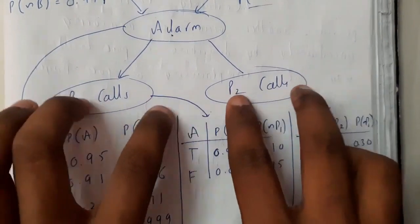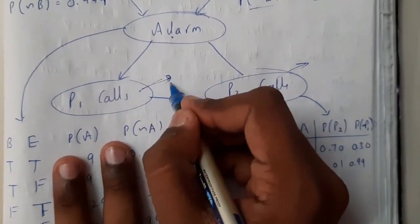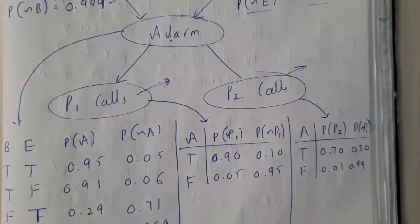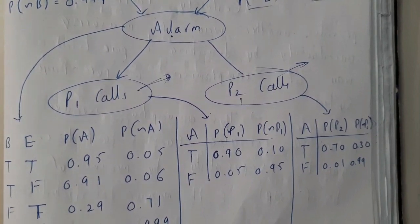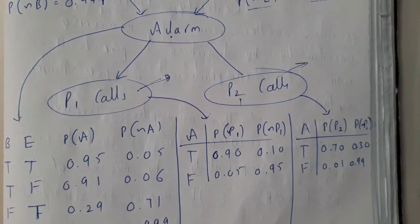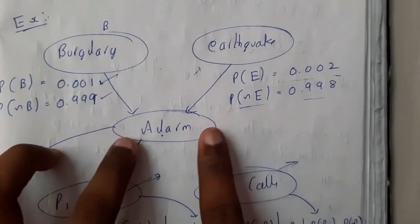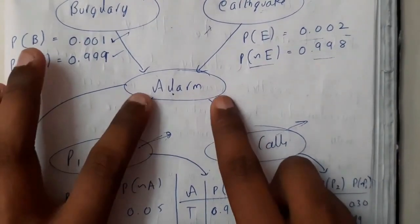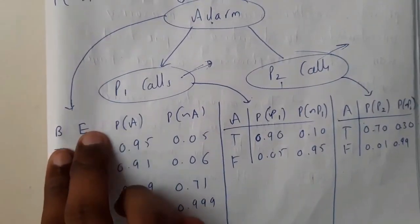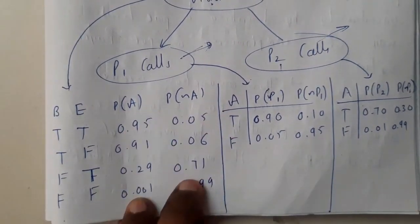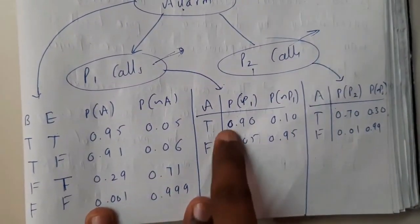After the alarm rings, you have two neighbors P1 and P2 who you ask to call you. P1 has a problem: when sleeping, he cannot hear the ring and cannot call you. P2 is a music listener, so if he's listening to music, he cannot call you. Here are the probabilities. Alarm is dependent on burglary and earthquake. P1 and P2 callers are depending on alarm. For alarm, we'll have combinations of burglary and earthquake: true-true, true-false, false-true, false-false. We'll have separate probabilities for alarm rings and alarm not rings.